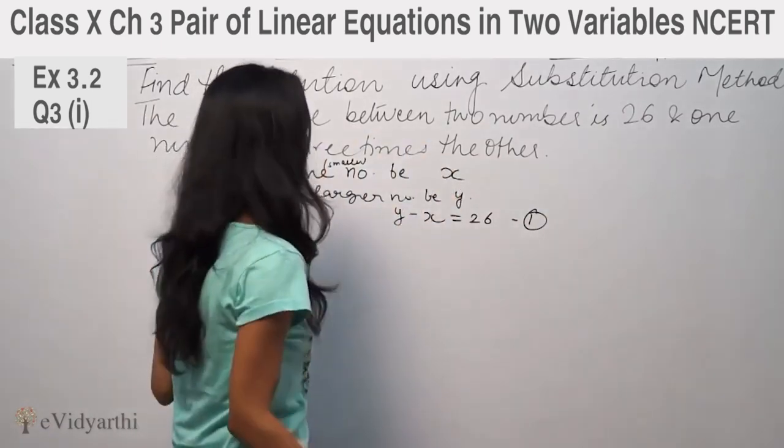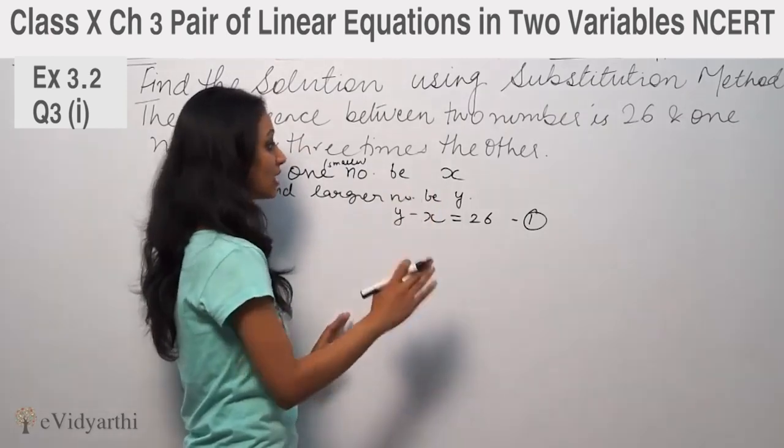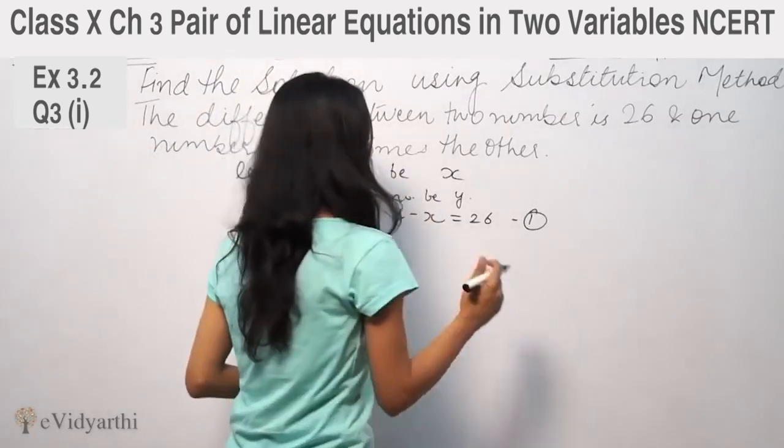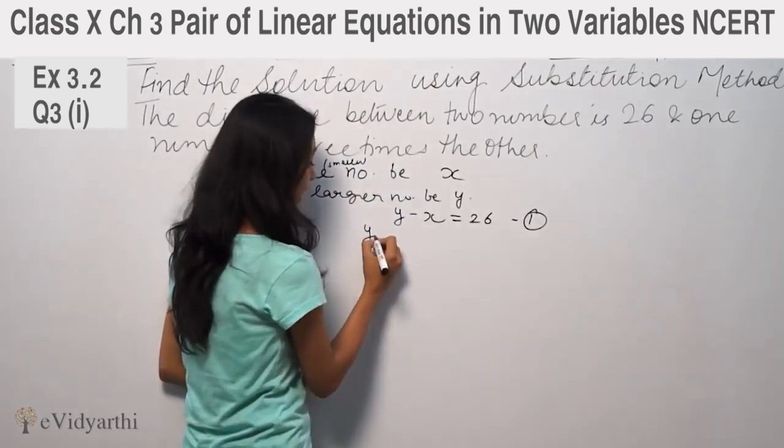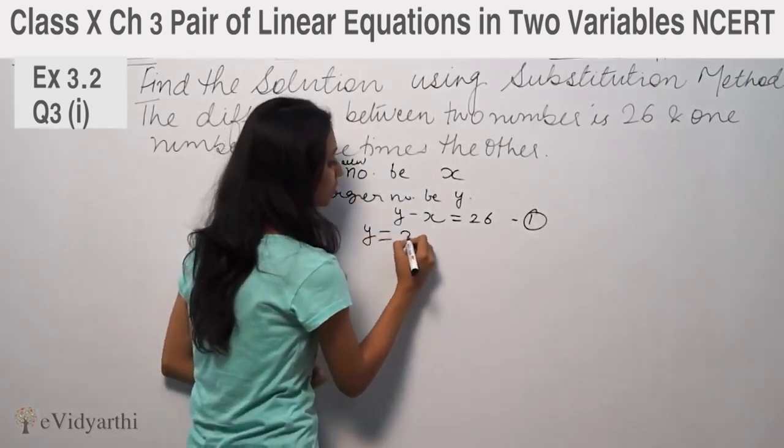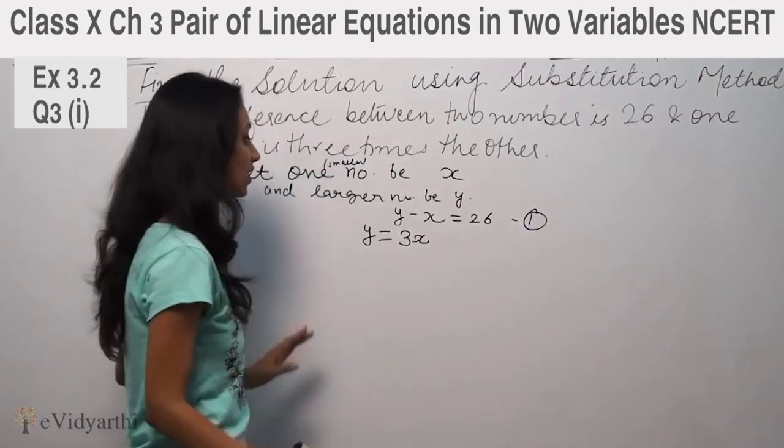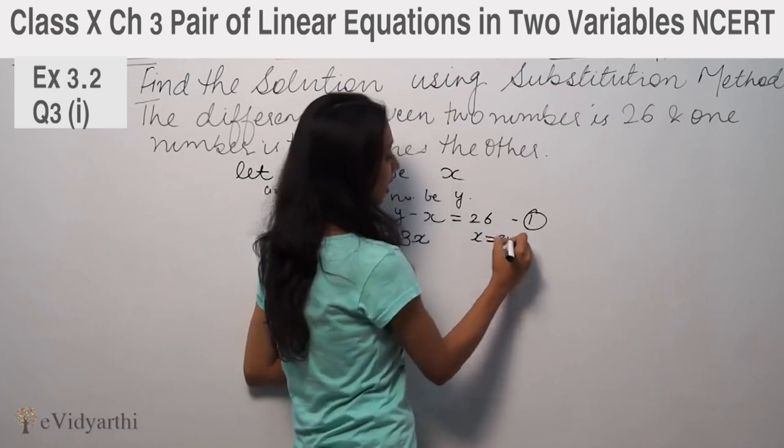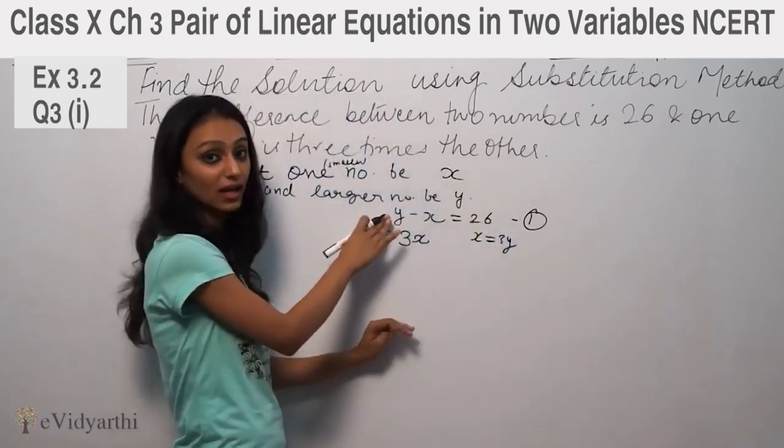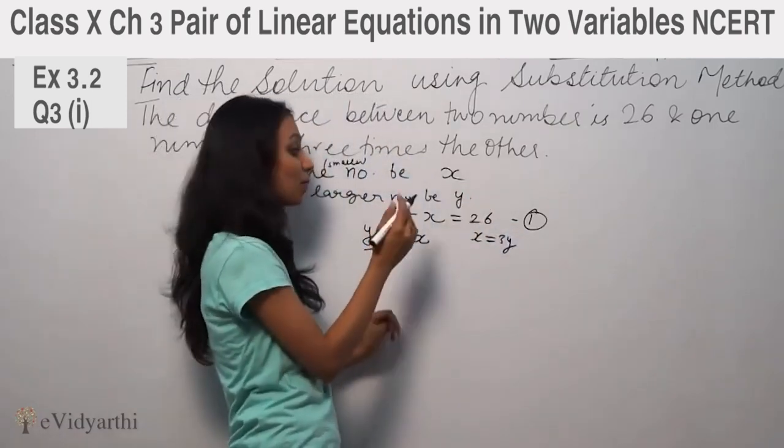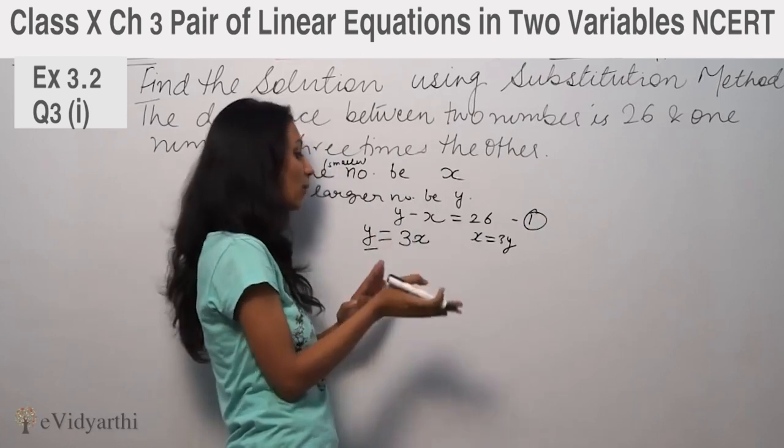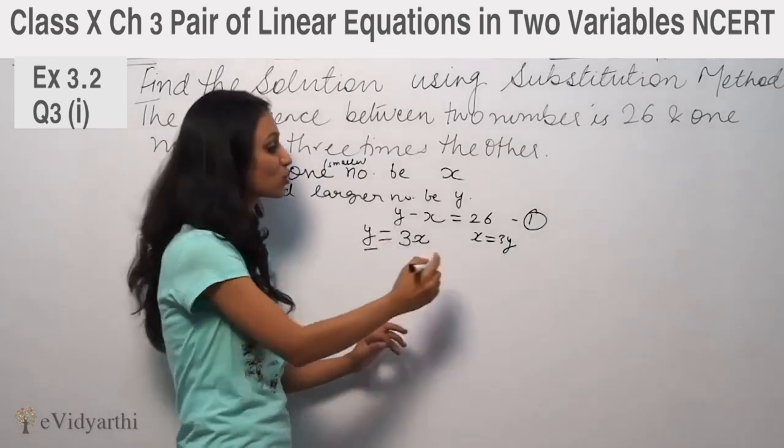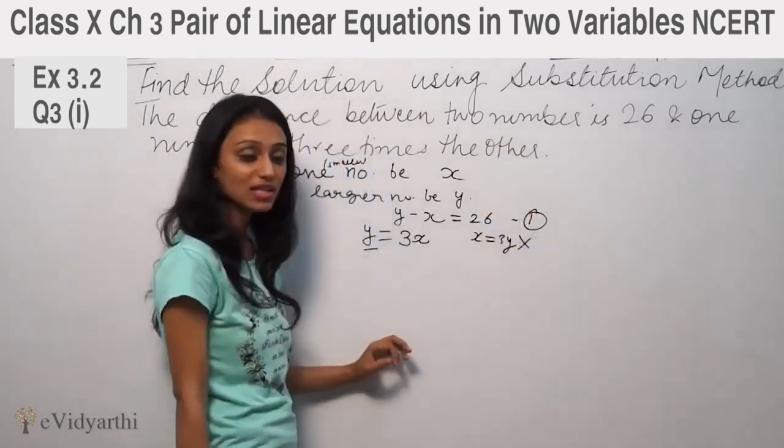Then, one number is three times the other. So one number y is equal to three times the other. If you denote the larger number as y, you can write y equal to 3x. Remember, the larger number is three times the other number.